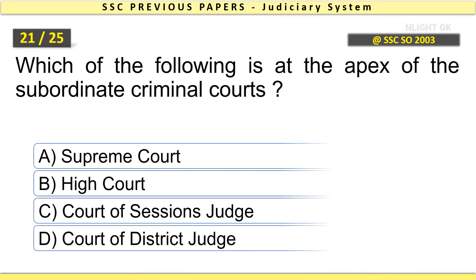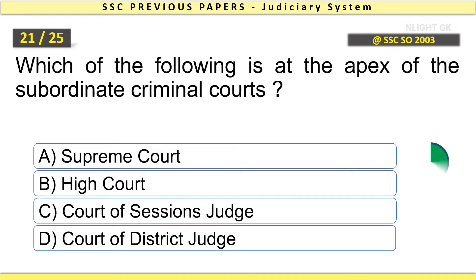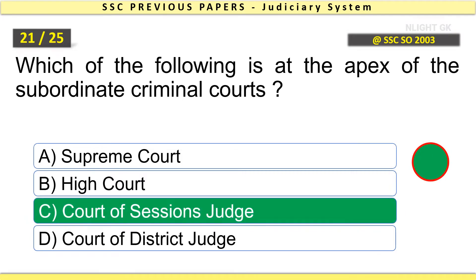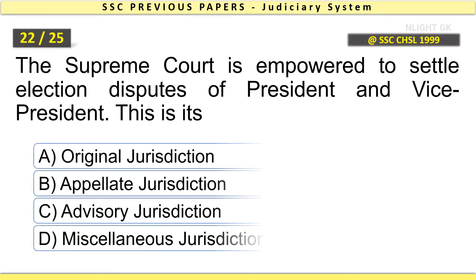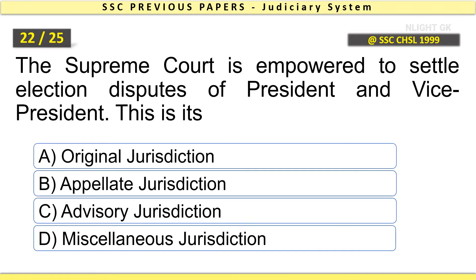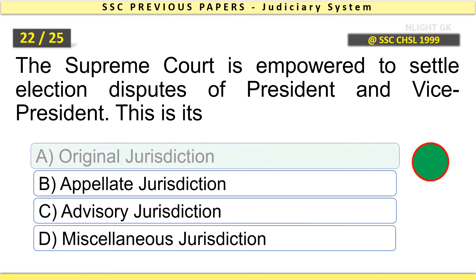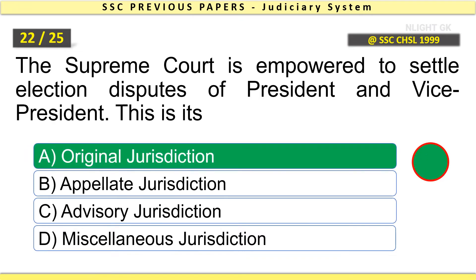Which of the following is at the apex of the subordinate criminal courts? Answer: Court of Sessions Judge. The Supreme Court is empowered to settle election disputes of the President and Vice President — this is its original jurisdiction.